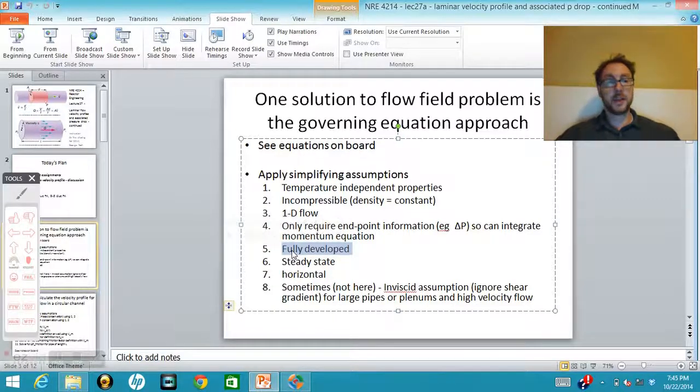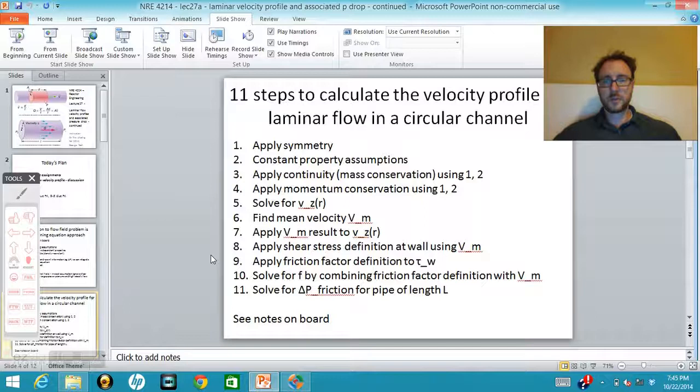As our pipe is drawn horizontally, gravity won't have an effect. So those are our assumptions from last time. We were going through an eleven step process, making our assumptions about symmetry and constant properties, and then applying them to the continuity and momentum equations. This is where we arrived.